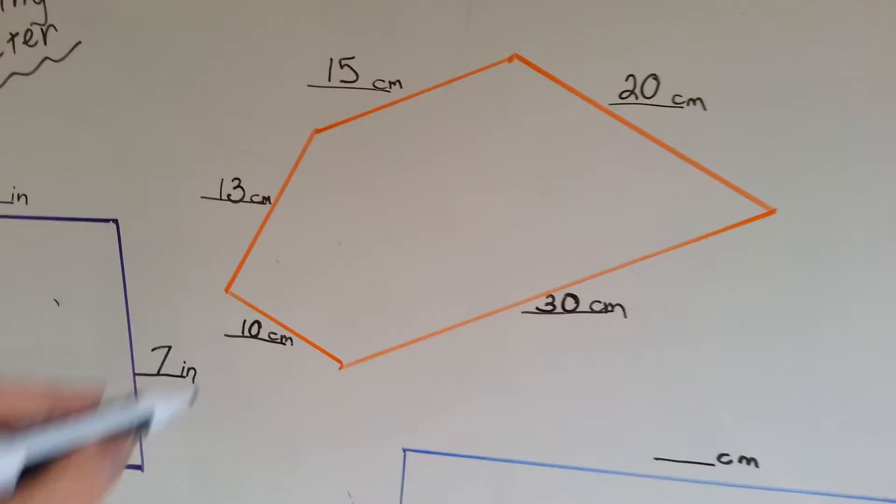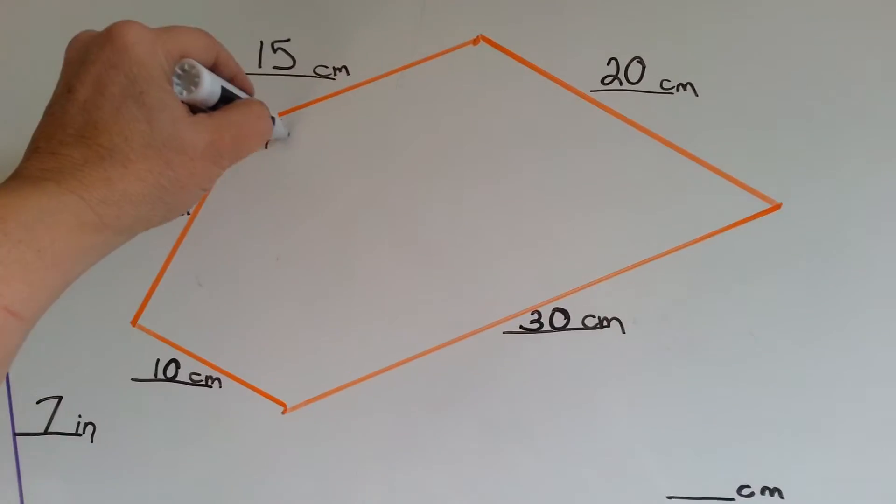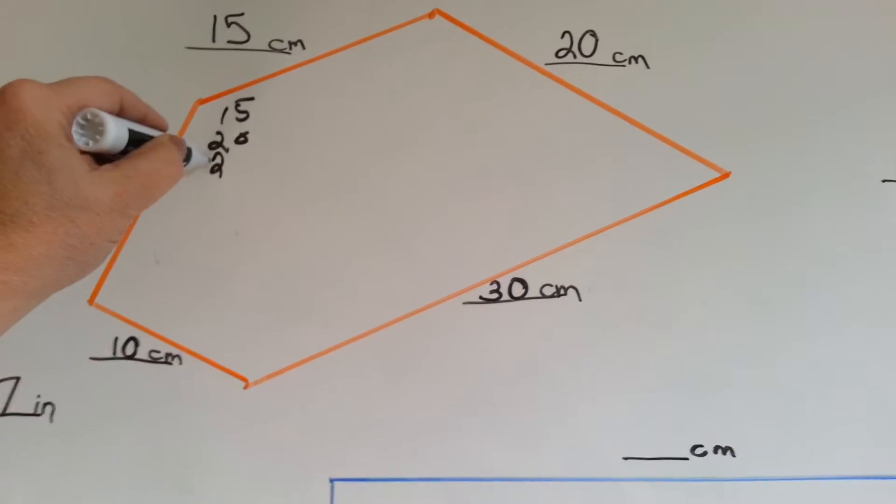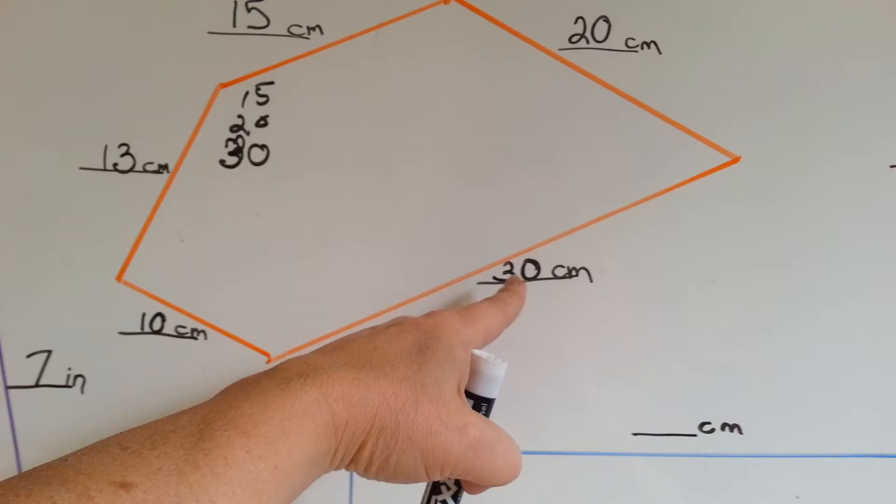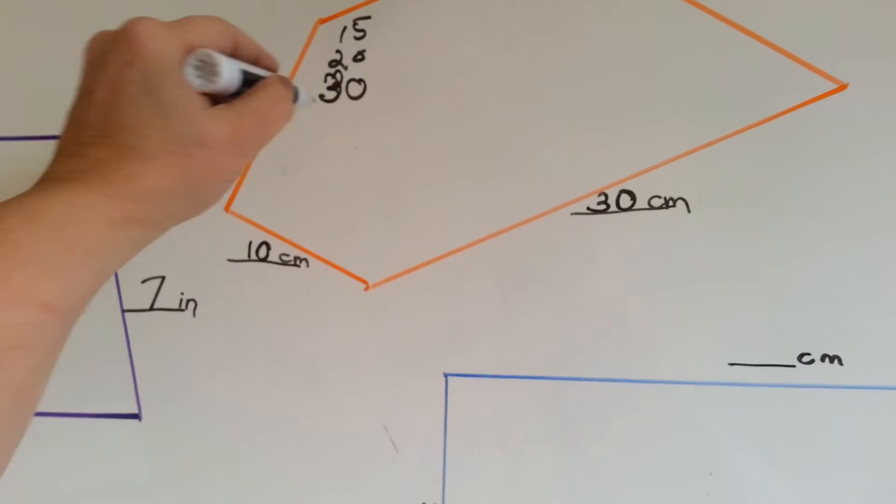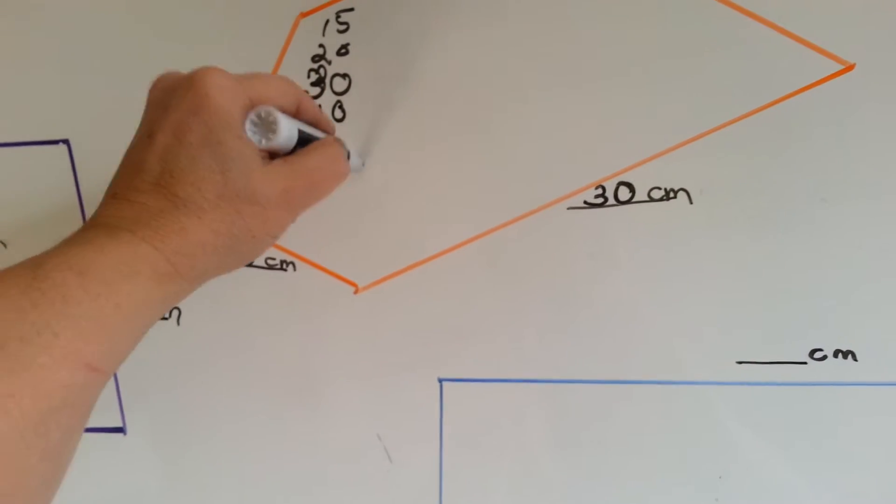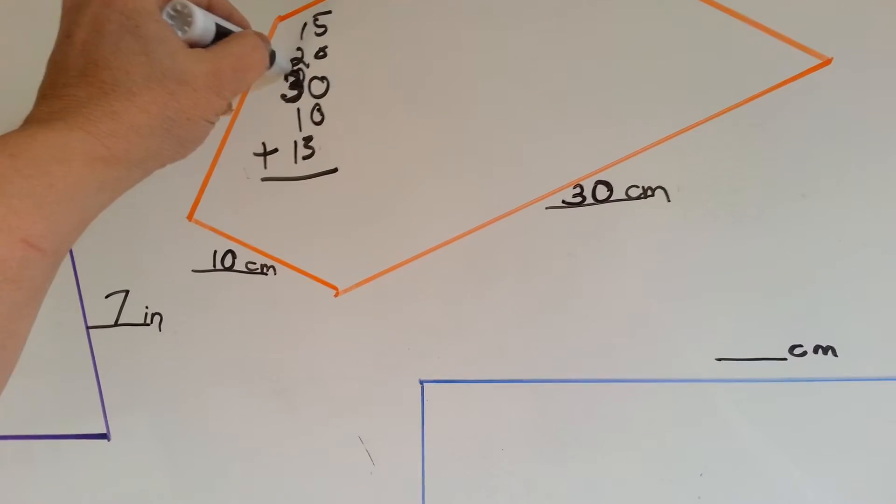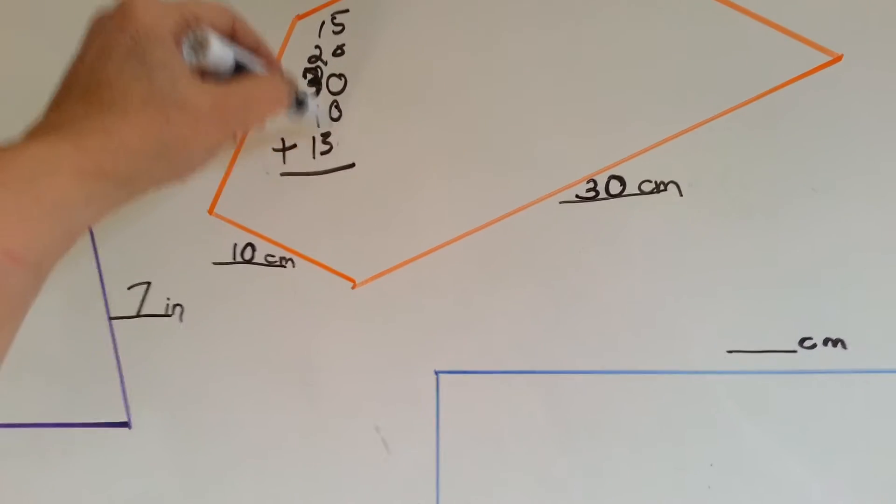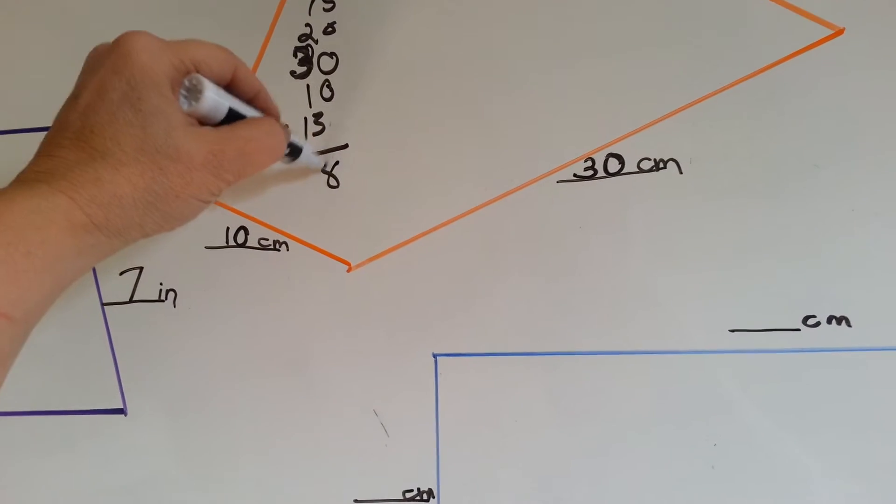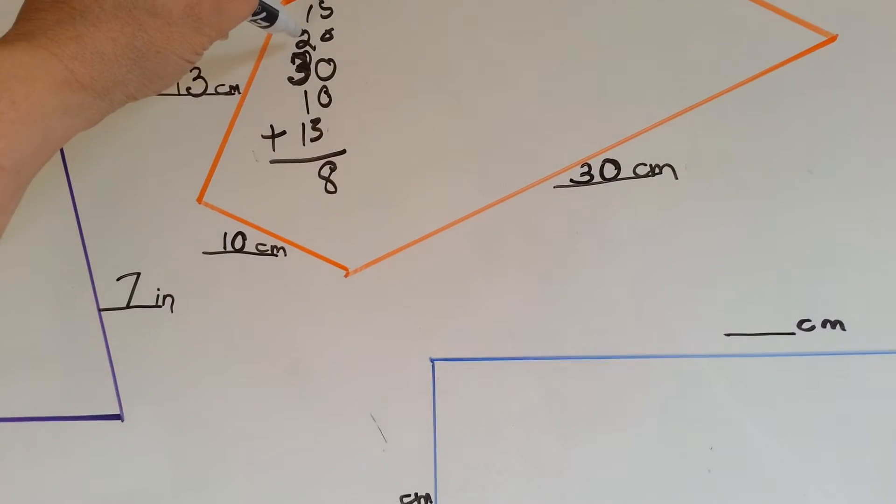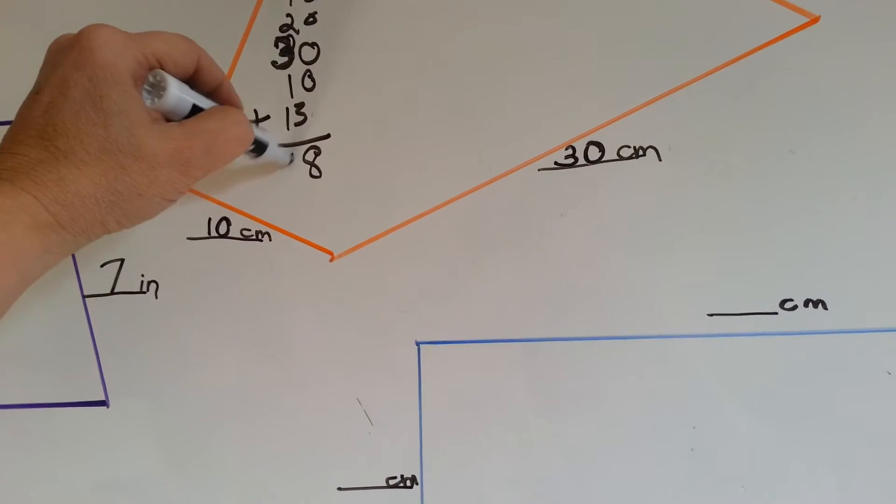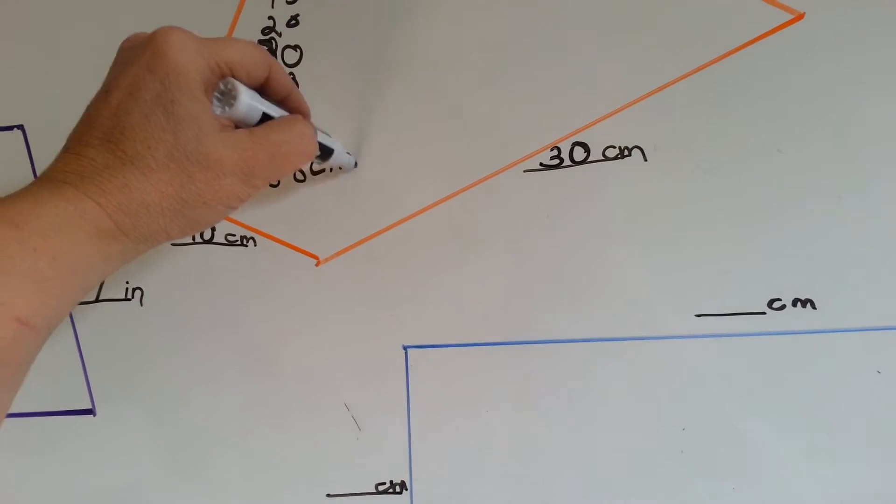Let's add up the orange one. We've got 15, we've got 20, we've got 30 right here, and we've got 10 and 13. We need to add these. Sorry about my nasty 3 here. 5 and 3 is 8, and 1 plus 2 is 3, 4, 5, 6, 7, 8. 88 cm.